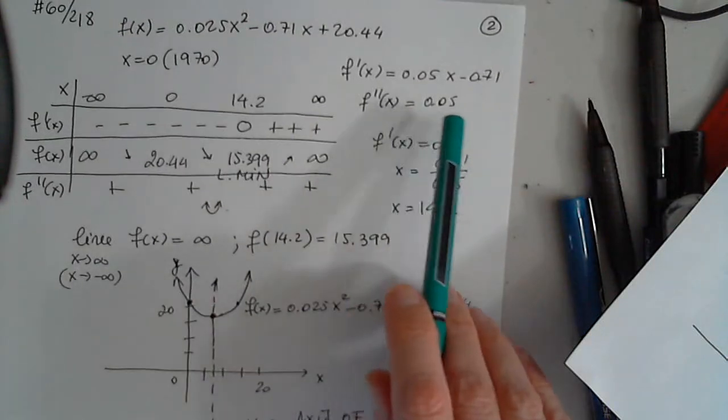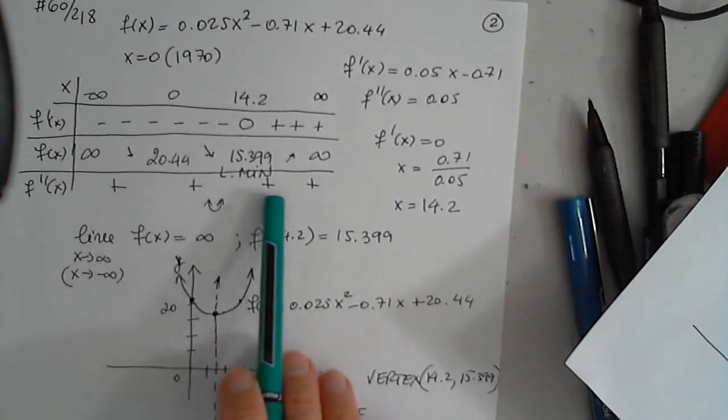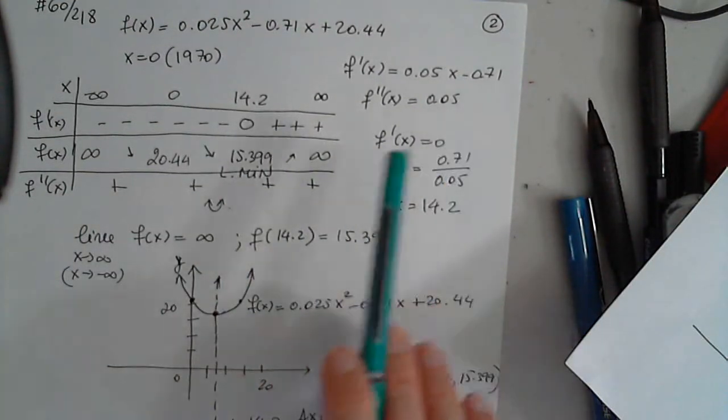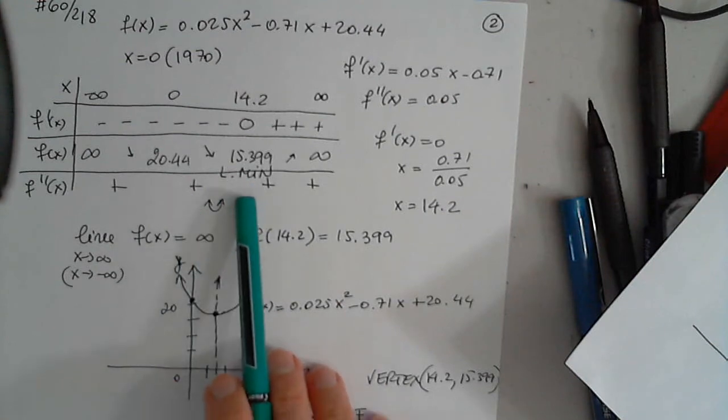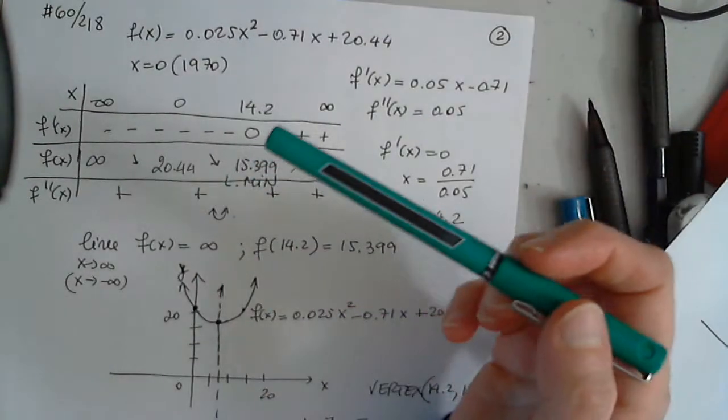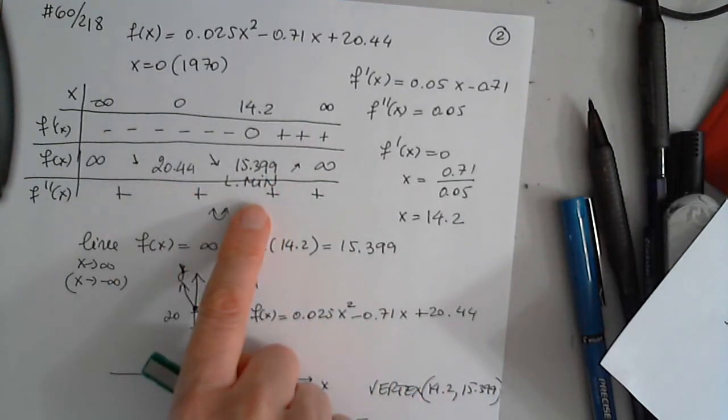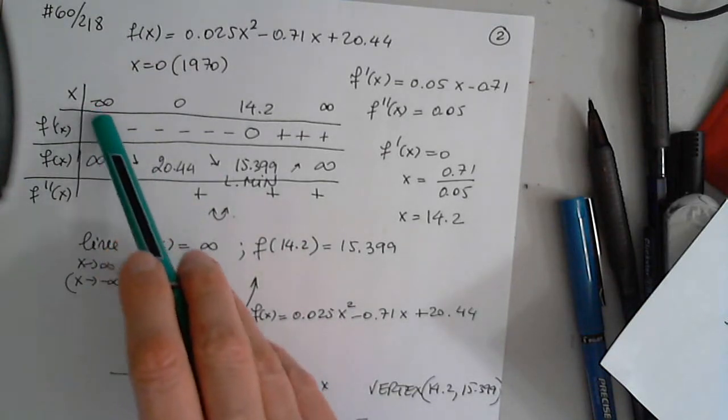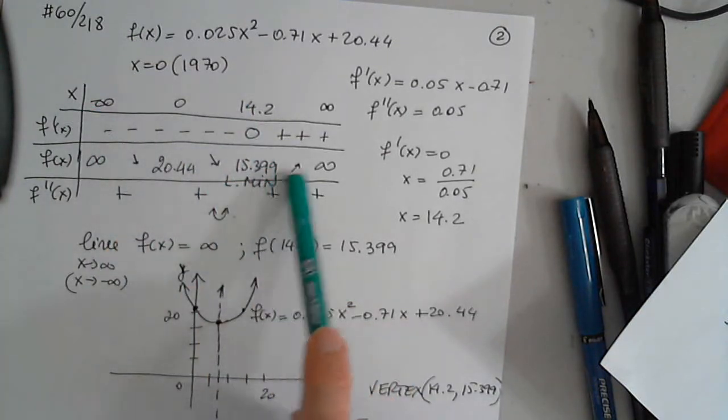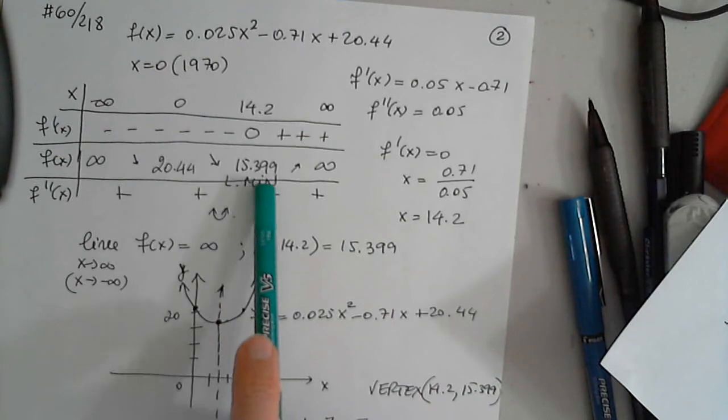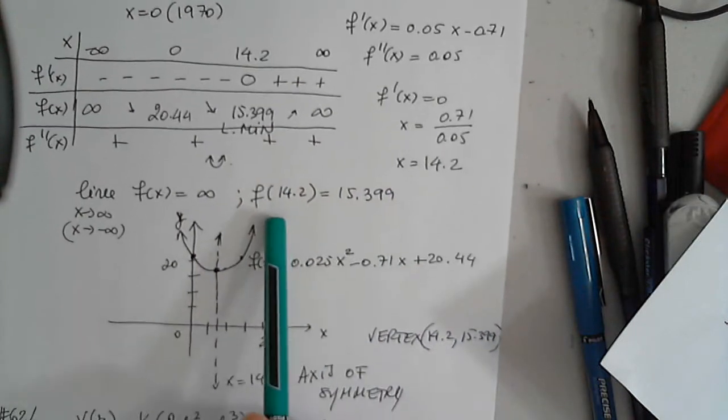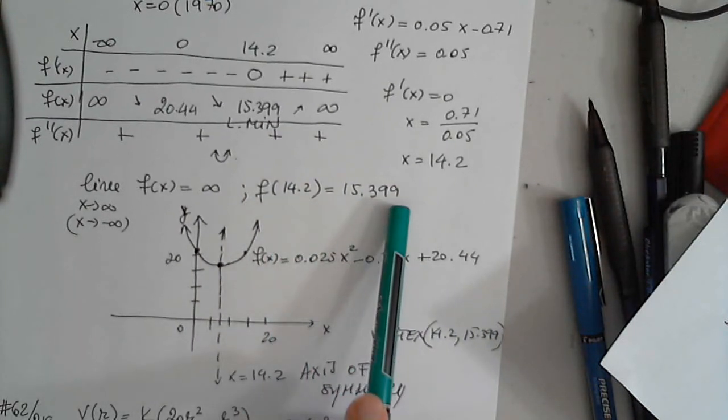The second derivative, it's a constant. It's always positive 0.05. So the function always opens upward. I have to plug in 14.2 to determine this, which is definitely a local minimum or relative minimum. Same thing, decreasing all the time till this point and then increasing. So when I plug it in, I got f of 14.2 is 15.399.